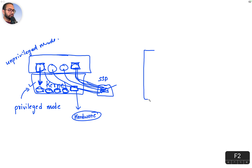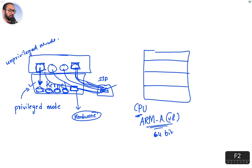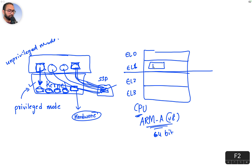I want to present a case about how CPUs are structured, which will add more clarity. The ARM A-class CPUs based on the v8 architecture — the 64-bit one — have something called exception levels: EL0, EL1, EL2, and EL3. The Linux kernel in this case runs in EL1.